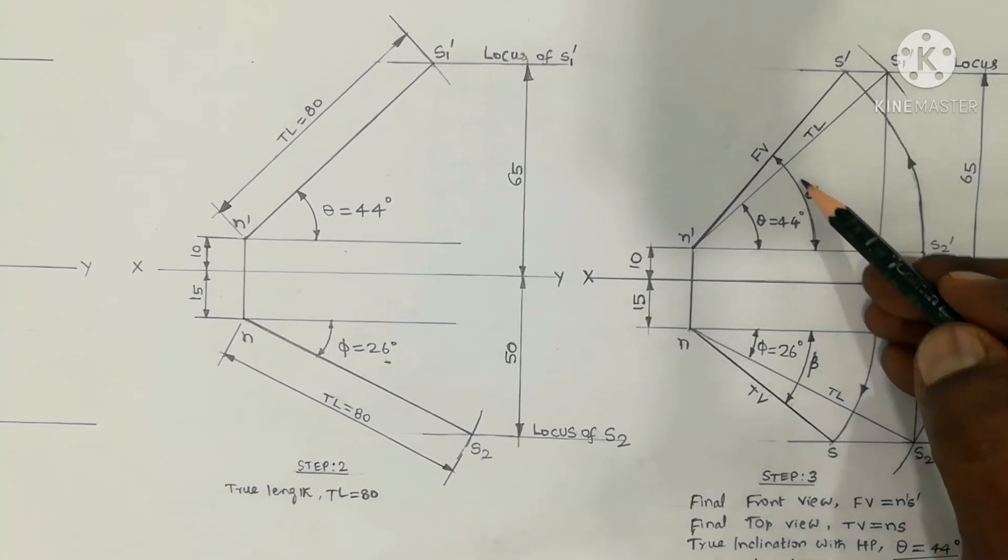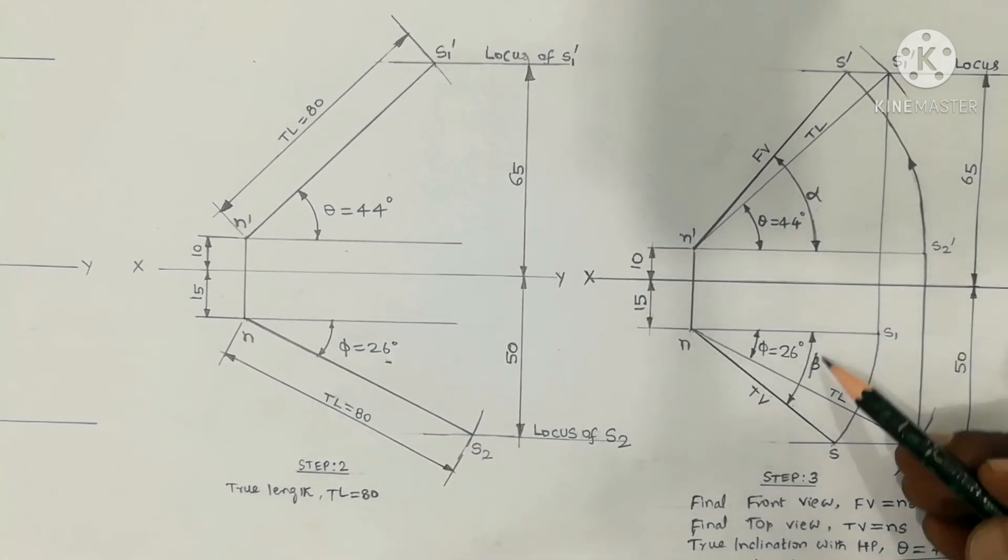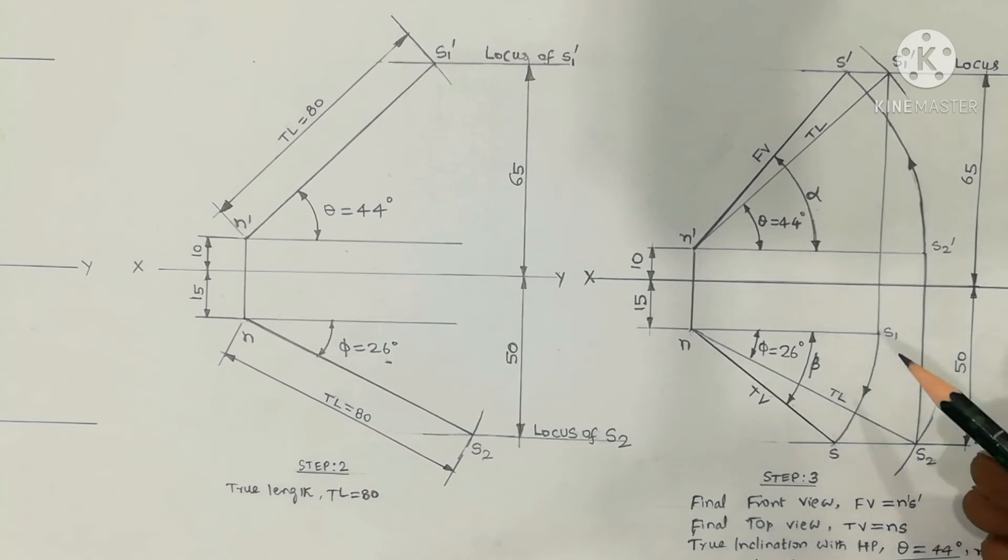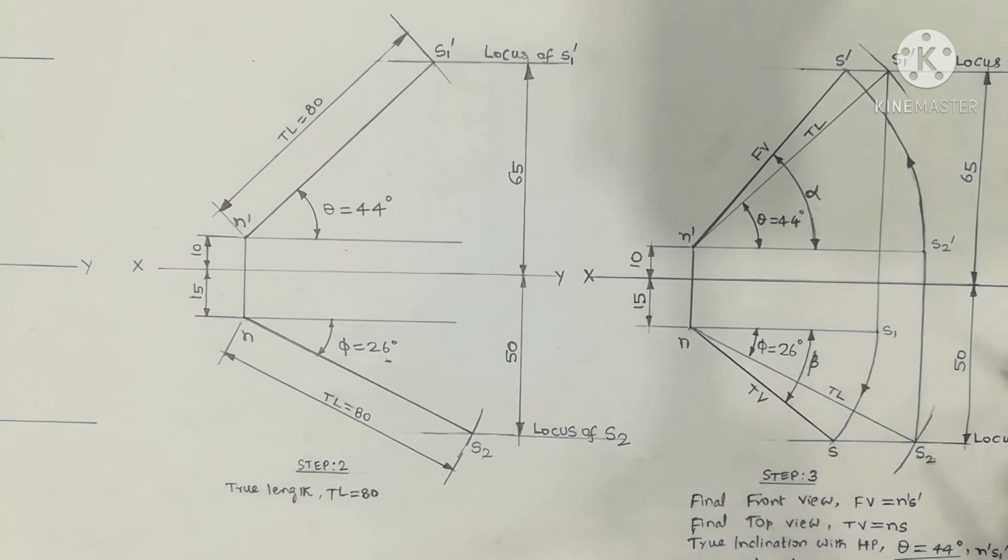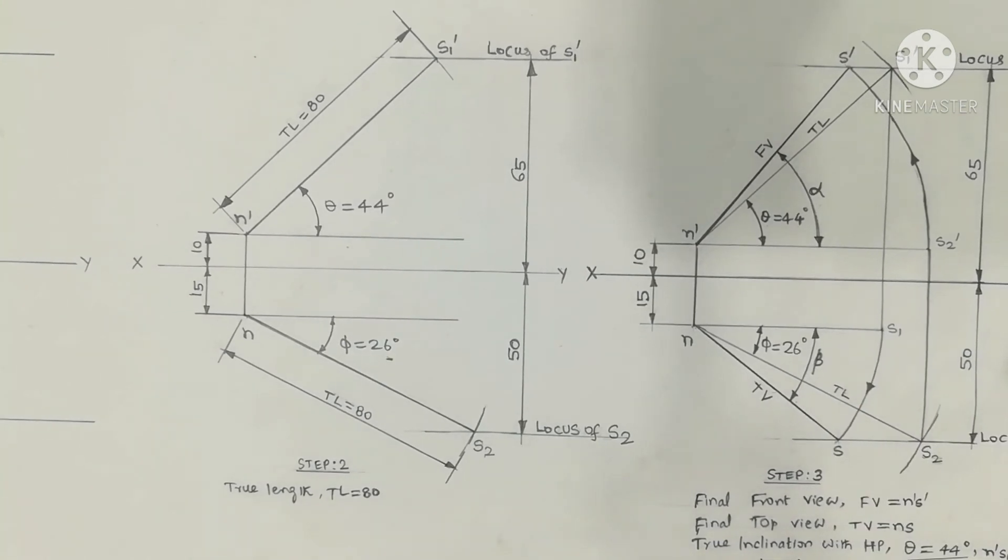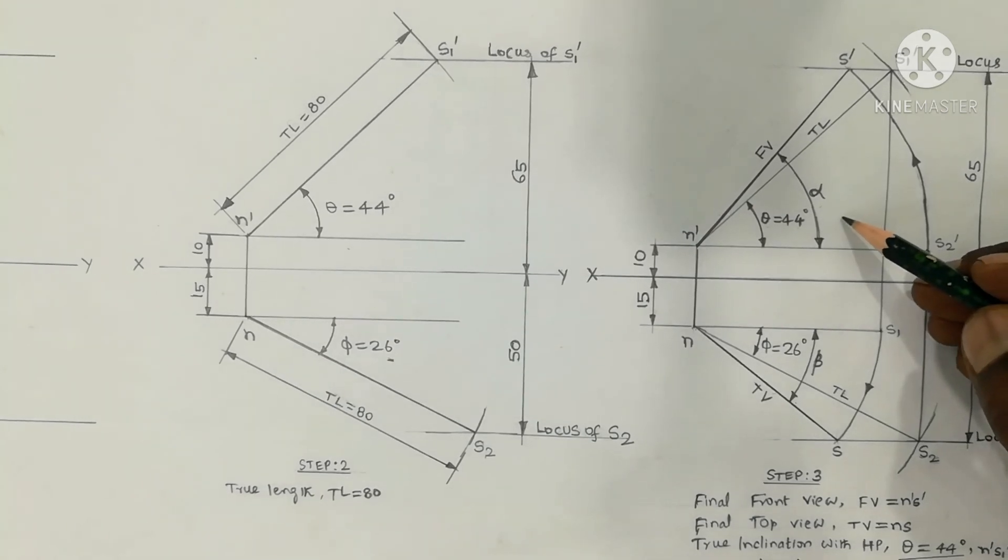This angle is alpha. Alpha, beta - the question asks for theta and phi. It is measured as 44 degrees and 26 degrees. In exam practice, this is for understanding purpose. In the sheet you can complete the diagram. You can complete the diagram after understanding the concept.